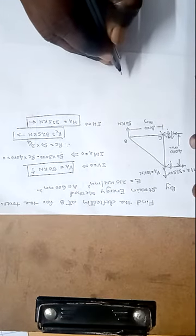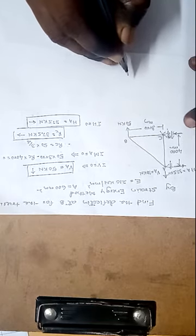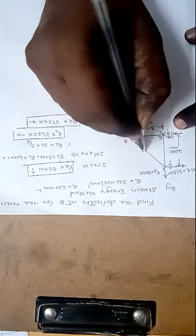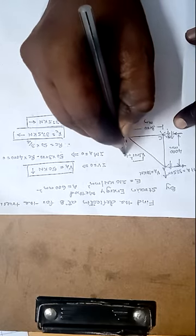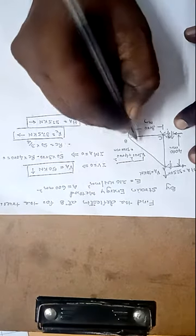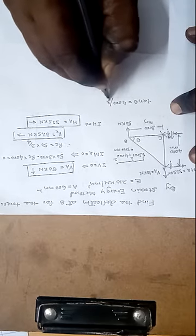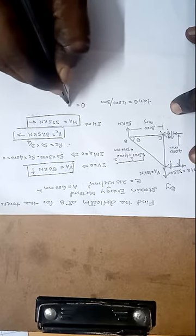After knowing the support reactions, we calculate the forces in each member. The vertical height is 4000 mm and horizontal distance is 3000 mm, so by Pythagoras' theorem the diagonal member length is √(3000² + 4000²) = 5000 mm. The angle theta satisfies tan θ = 4000/3000, giving θ = 53.13°. Therefore sin θ = 4/5 = 0.8 and cos θ = 3/5 = 0.6.